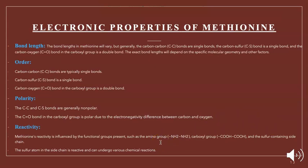Now for electronic properties of methionine we have our bond length, order, polarity and reactivity. For our bond lengths we have single bonds and double bonds: the single bonds being C-C carbon-carbon bonds, C-S carbon-sulfur bonds, and C=O double bonds which are our carbon-oxygen or carboxyl group bonds. The single bonds are going to be significantly longer than the double bonds. This is primarily because double bonds are stronger since there are more bonds between them, meaning that they attract each other more making them harder to separate.